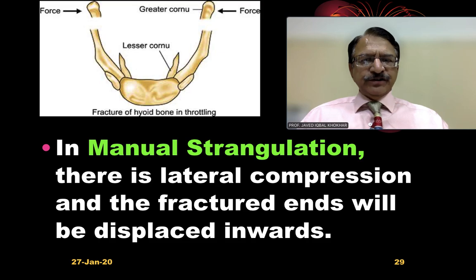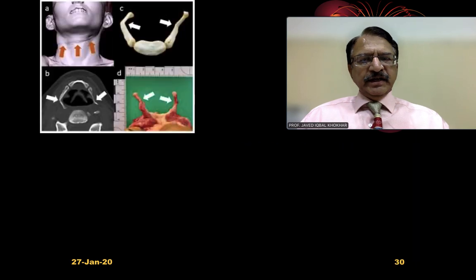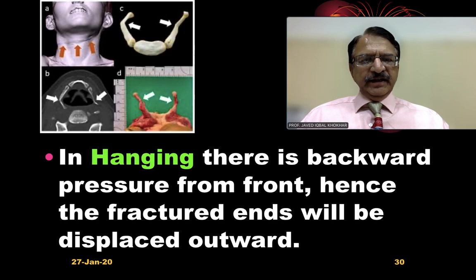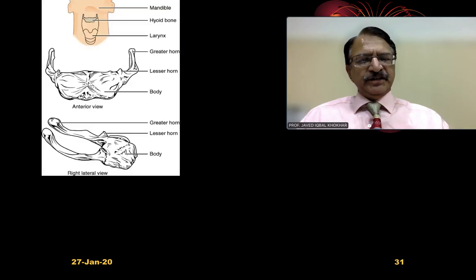In summary: in manual strangulation, there is lateral compression and the fractured end will be displaced inward. In hanging, there is backward pressure from the front, hence the fracture segment will be displaced outward.